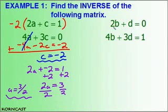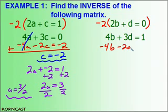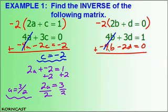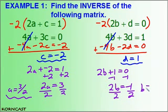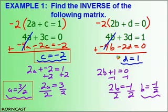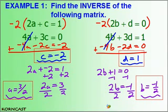Just like before, I'm going to eliminate the b's by multiplying the top equation by negative 2. That gives negative 2 times d equals negative 2d, and negative 2 times 0 equals 0. Adding eliminates the b's: 3d minus 2d is d, and 1 plus 0 is 1, so d equals 1. Substituting into the top equation: 2b plus 1 equals 0. Subtracting 1 from both sides: 2b equals negative 1, so b equals negative 1 half. I've now used systems of equations to find all four unknowns: a, b, c, and d. Now I can substitute those in and I have my matrix.